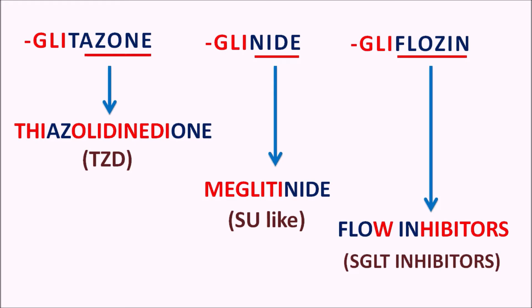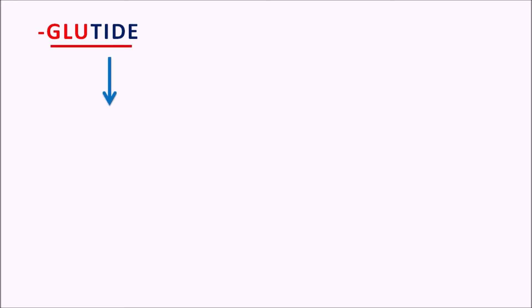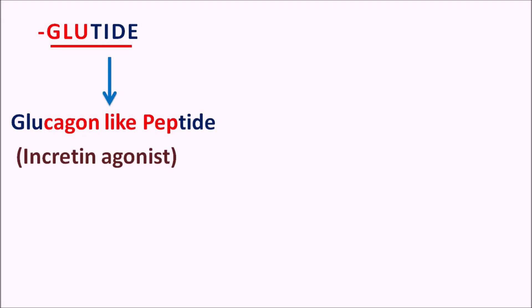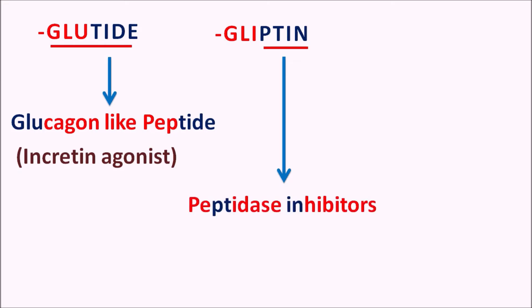The suffix GLUTIDE is derived from glucagon-like peptide, so GLUTIDE indicates these are glucagon-like peptide agonists — that is, incretin agonists or incretin mimetics. These drugs act on incretin receptors such as GLP-1 (glucagon-like peptide-1) and GIP (glucose-dependent insulinotropic peptide), increasing incretin activity to control glucose levels. Another suffix, GLIPTIN: within the term, PT indicates peptidase enzyme and IN indicates inhibitor, so gliptins are peptidase inhibitors — specifically DPP-4 (dipeptidyl peptidase-4) inhibitors, which are responsible for the metabolism of incretins.